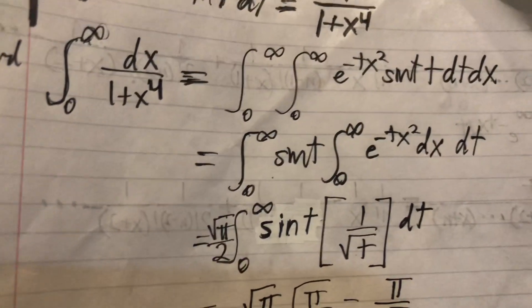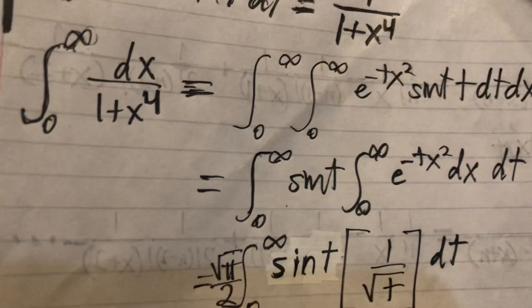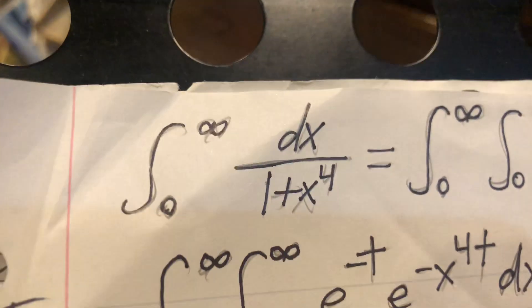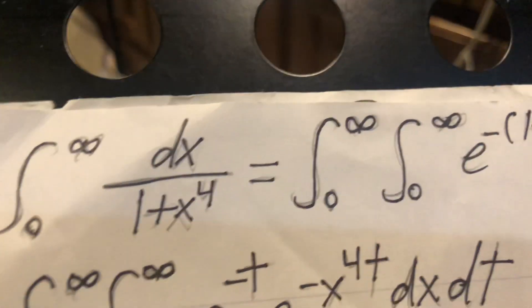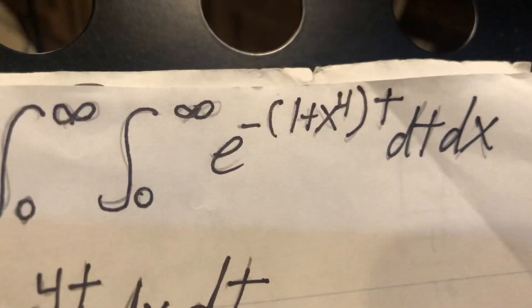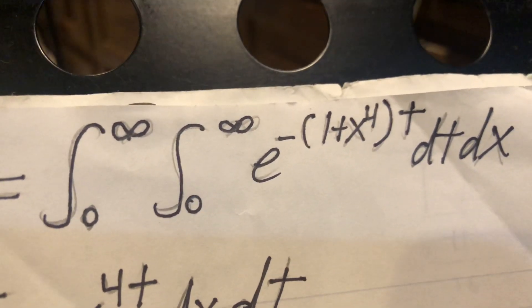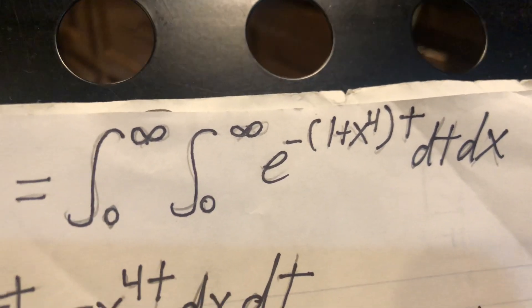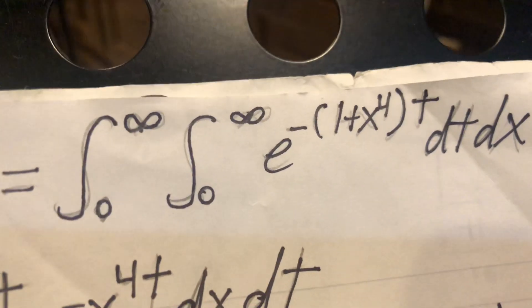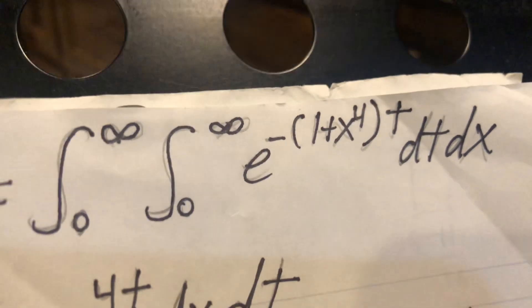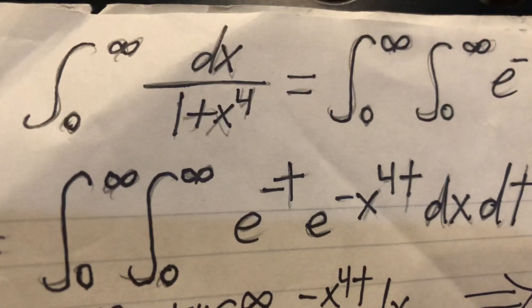Now another way to do it - this way I figured out a few years ago as a joke. We know that integral from zero to infinity of e to the minus st dt is 1 over s. So why don't we just put that whole 1 plus x to the fourth right there in the exponential? Let's see what happens.